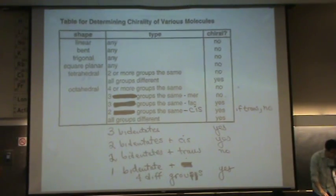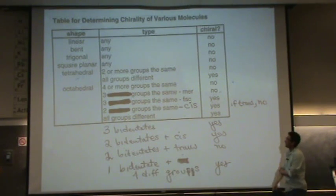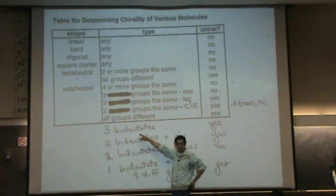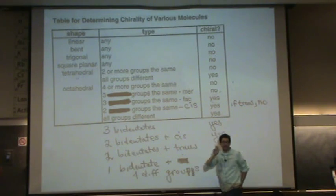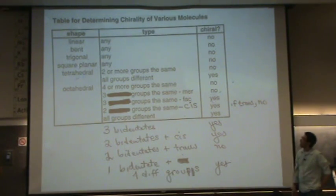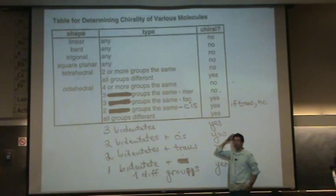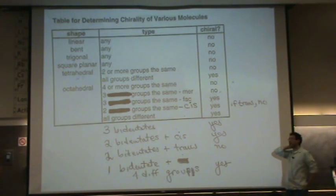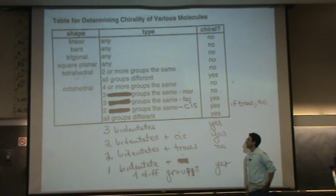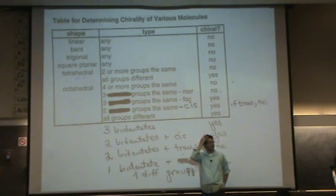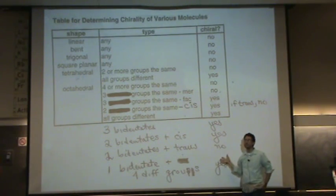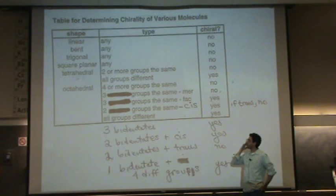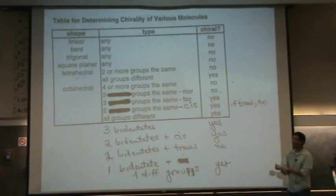Now, where it gets crazy is with the bidentates. If you have three bidentates on a metal center, binding or chelating at two places, then it's definitely going to be chiral — like a tris-ethylenediamine iron(III) ion, that's going to be chiral. If you have to use this table there's a lot to remember. If you can just do it in your head or draw it out, it's always ideal because there's no memorization needed.